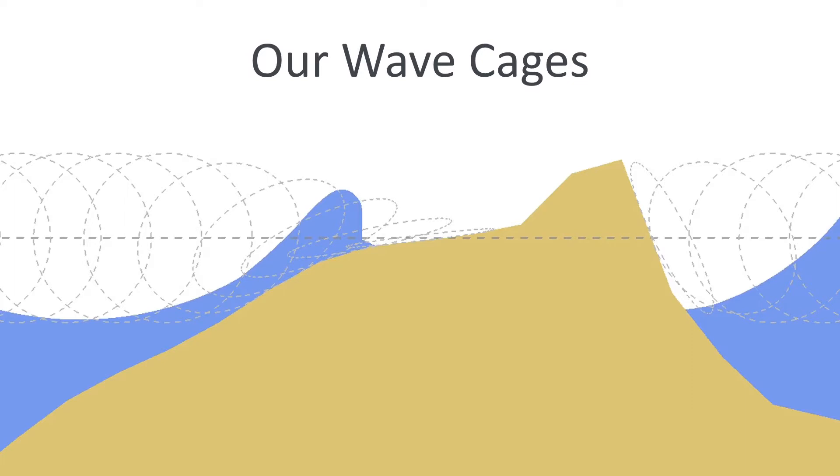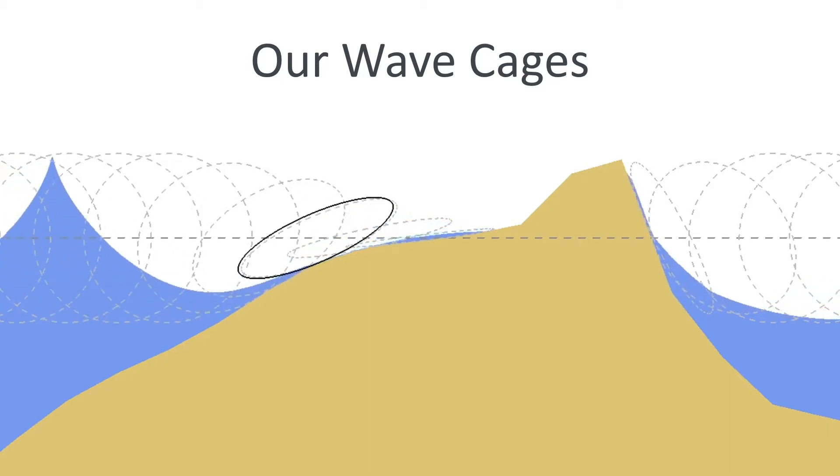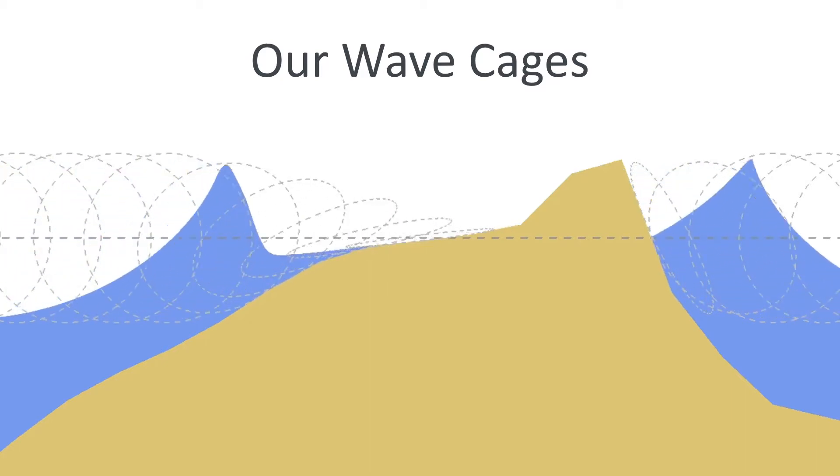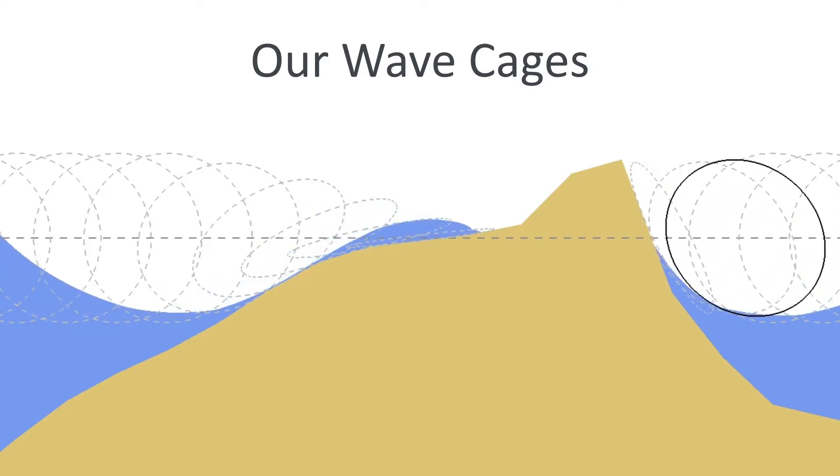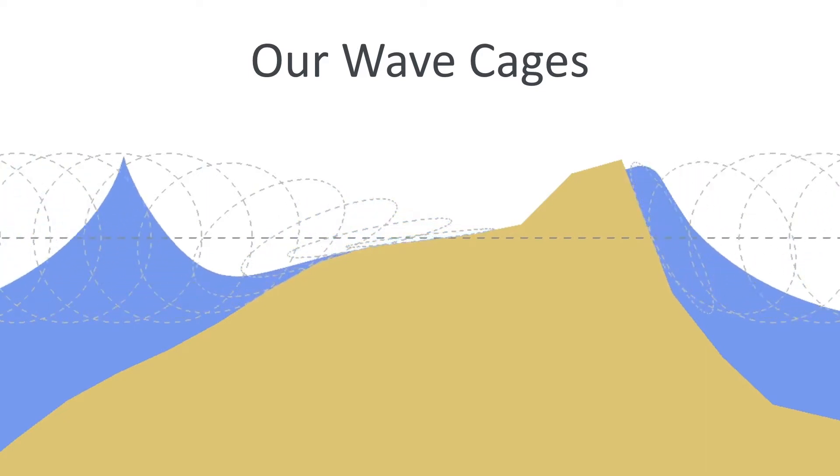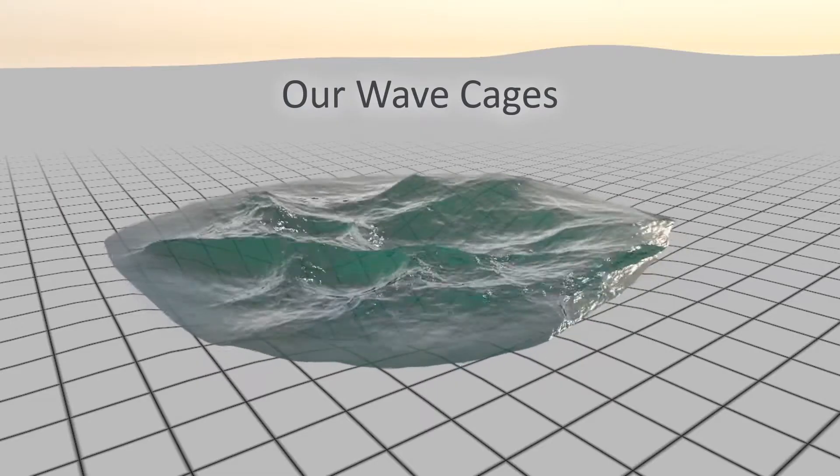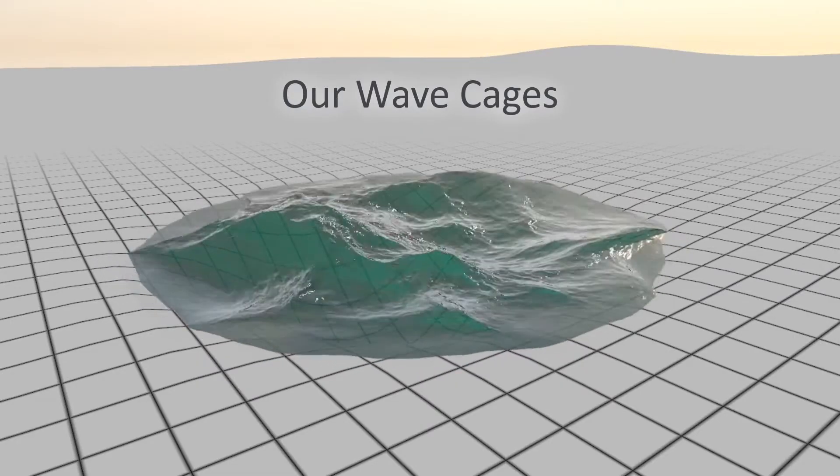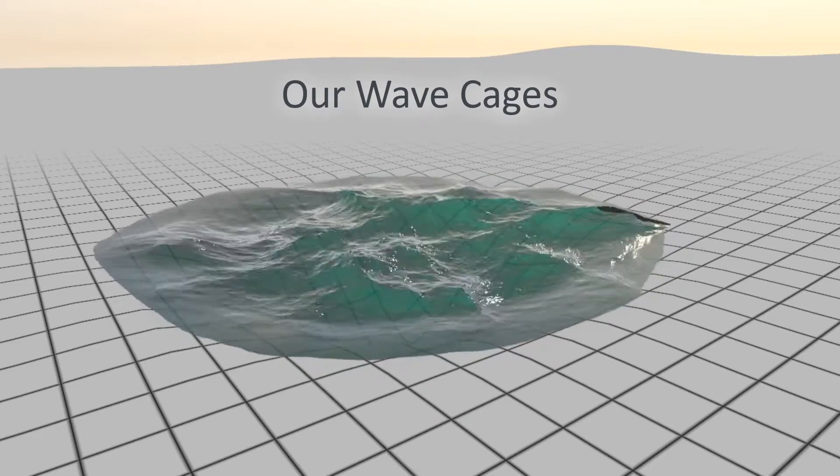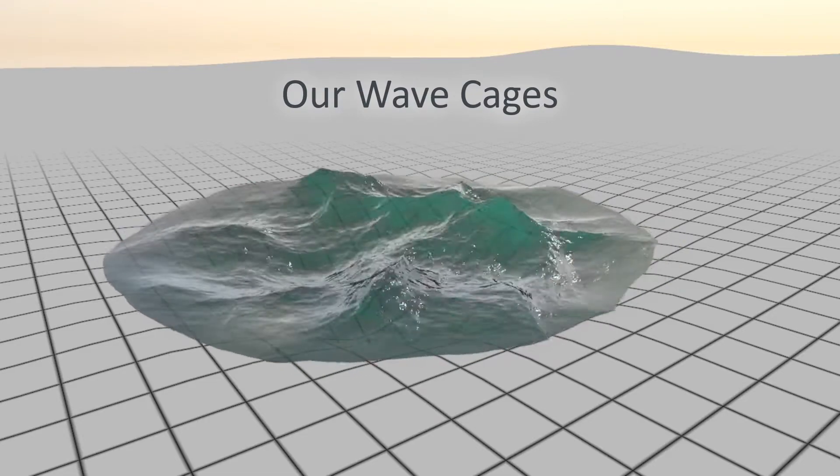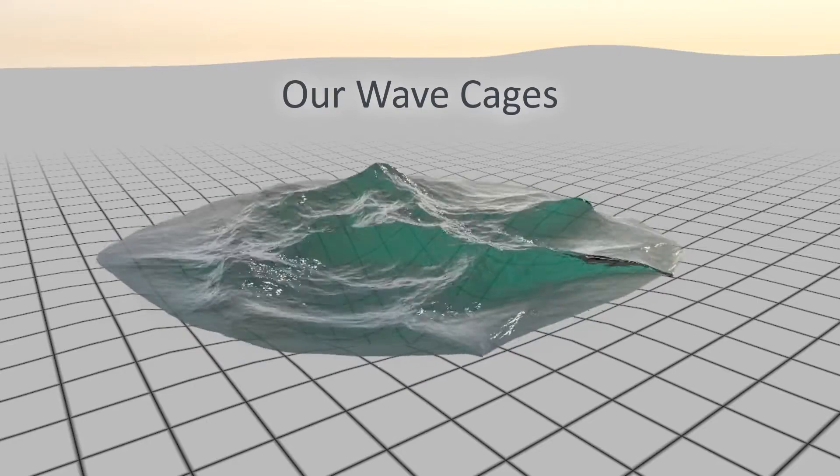By contrast, we propose so-called wave cages, which are essentially ellipsoids arranged along the rest surface. Note how they give a sliding motion at the water line. The same can be observed in this scene. Note how the wave cages keep the water moving at the boundary, while no interpenetration with the terrain occurs.